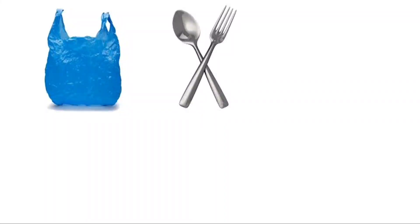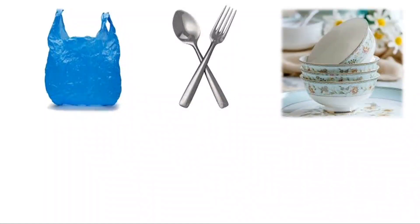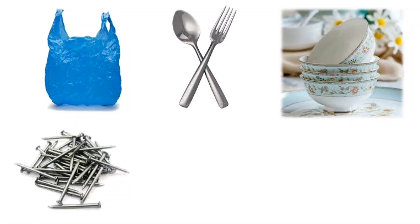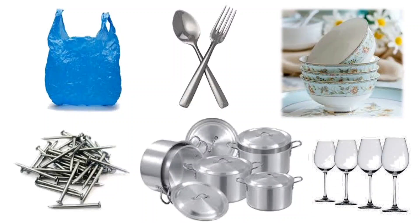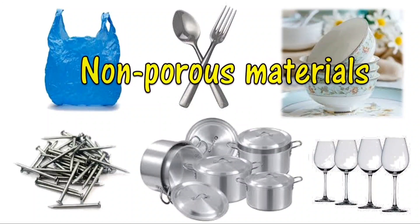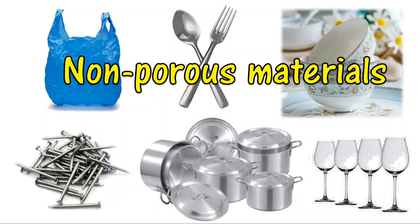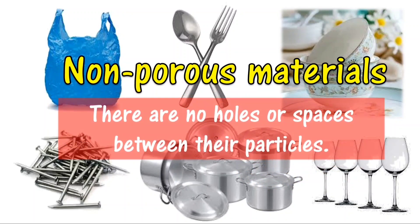Materials like plastic bag, metal spoon and fork, porcelain cups, iron nails, aluminum cookware, and glasses that you use at home do not absorb water or liquid. They are called non-porous materials. There are no holes or spaces between their particles.